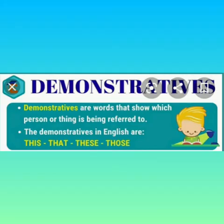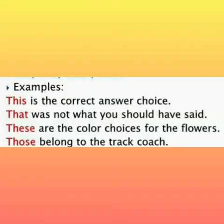Demonstrative adjectives are words that show which person or thing is being referred to. The demonstratives in English are this, that, these, and those. For example: This is the correct answer choice. That was not what you should have said. These are the color choices for the flowers. Those belong to the track coach.